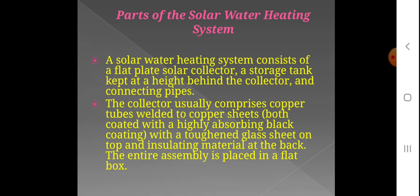A solar water heating system consists of a flat plate solar collector, a storage tank kept at height behind the collector, and connecting pipes. The main part is the flat plate solar collector.